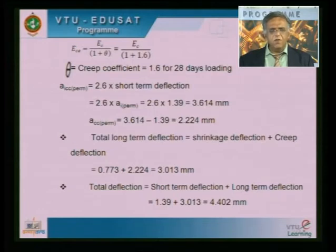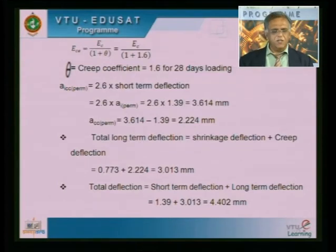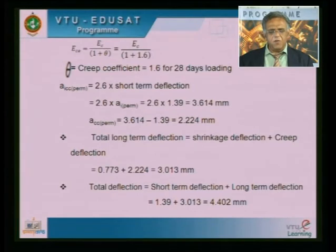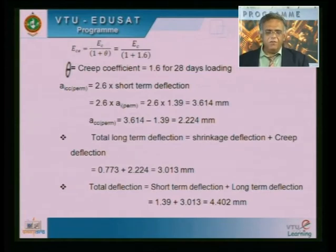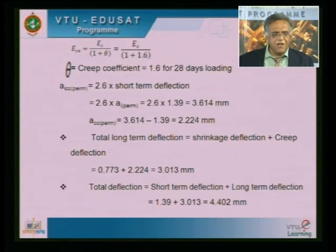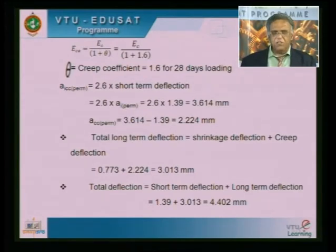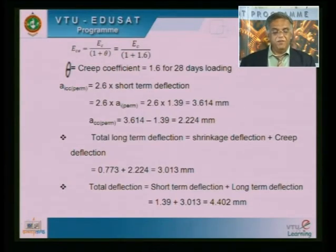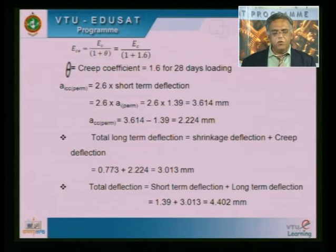The next step is to calculate the creep deflection only. This is obtained by deducting the short term deflection from 3.641 mm. In this problem the creep deflection value is 2.224 mm. So, to summarize: short term deflection is 1.39 mm; deflection due to shrinkage is 0.773 mm; and creep deflection is 2.224 mm.